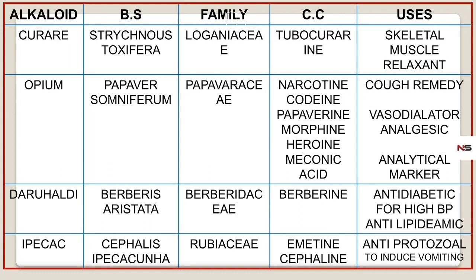The last isoquinoline alkaloid is Ipecac. Its biological source is Cephaelis ipecacuanha, belonging to the family Rubiaceae. The chemical constituents are emetine and cephaline. Emetine is used to induce vomiting. It can also be used as an anti-protozoal agent.